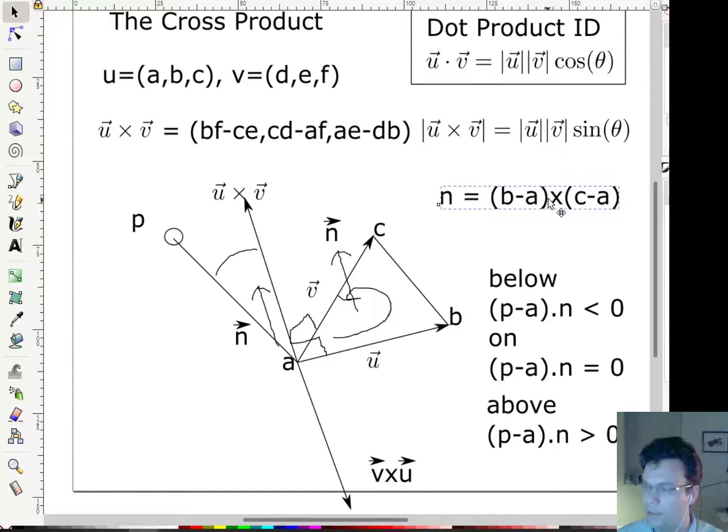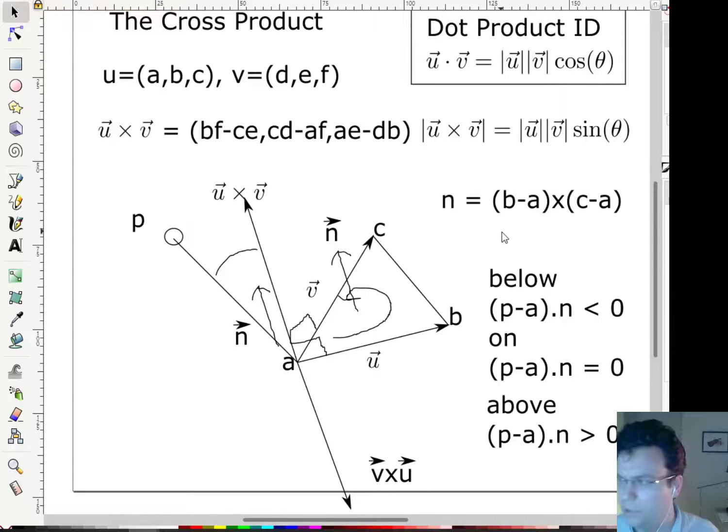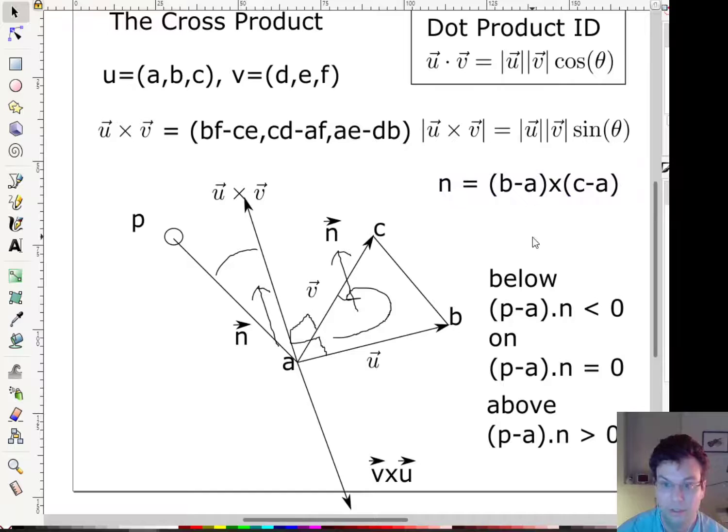The last thing I want to mention is, so this gives us a vector which is in the direction of the normal, and that's all we need to do these tests. But sometimes we actually want this vector to be a unit vector. We'll see a really good reason why when we get to illumination in a few weeks. So just, I just want you to remember how to normalize. I'll say n_norm is equal to n over the magnitude of n. So I would just divide by the magnitude of this cross product. And I would get a vector which is in the same direction, but it actually has magnitude of 1.